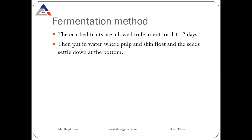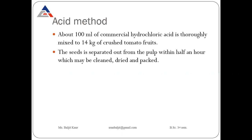To summarize the fermentation method: crush the fruit and keep it for one to two days, then put into water — the pulp and skin will float and seeds will settle down. Those seeds are collected, dried in the shade, and then packed for storage. The other method is the acid method.